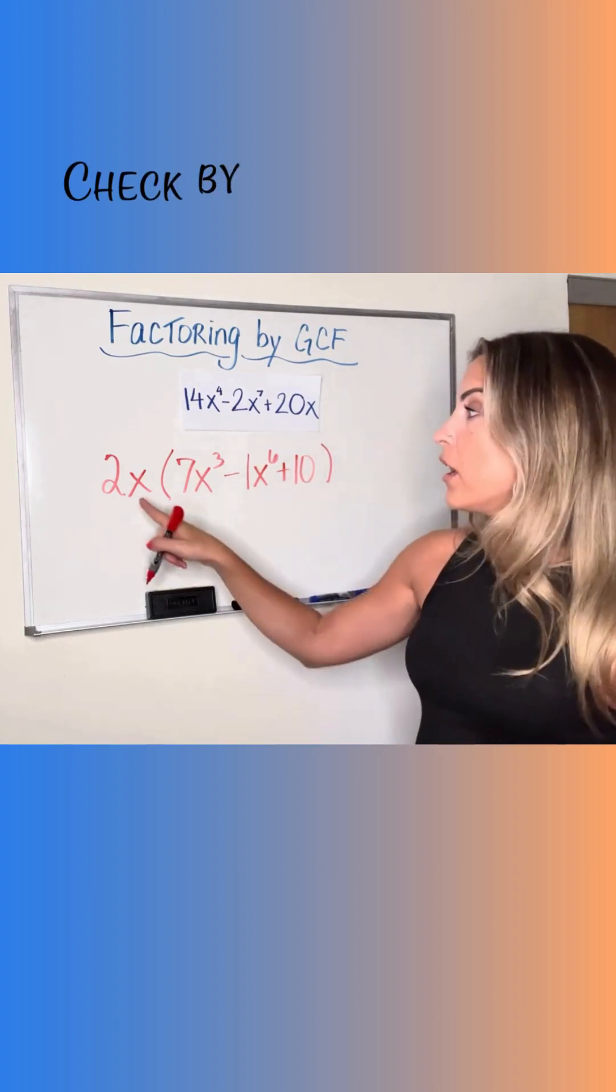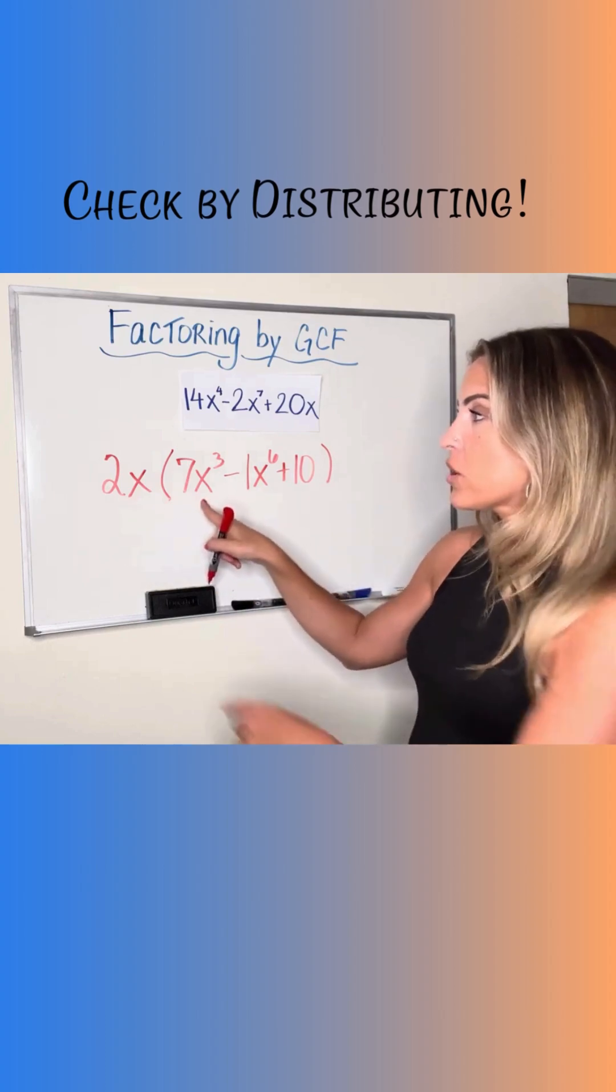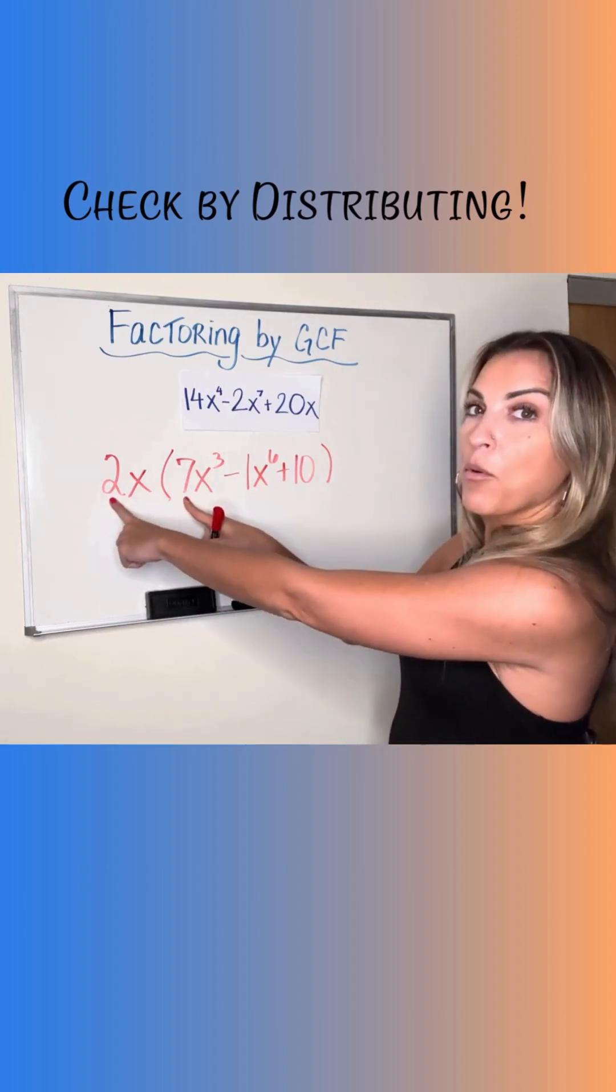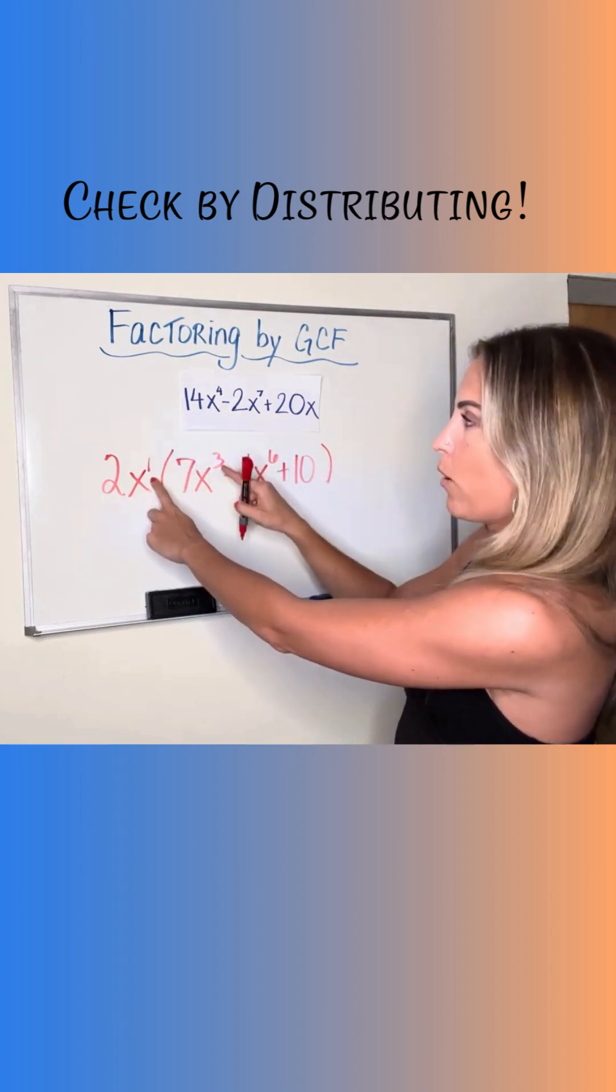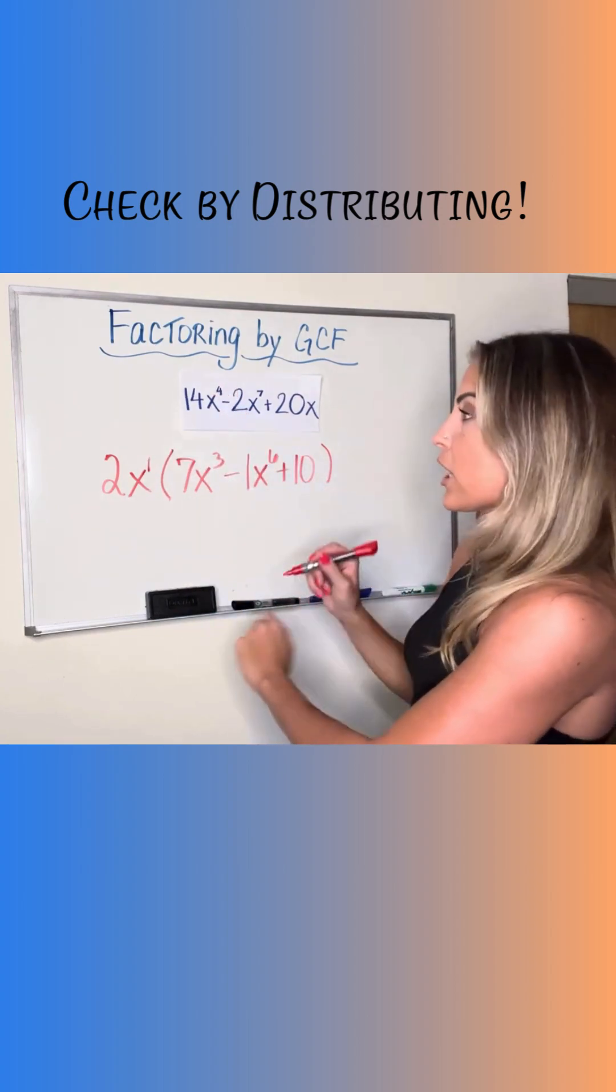And a quick check if we distribute back. 2x times 7x cubed, that's 14. And again, that multiplication rule says I keep the base and add the exponents. 1 plus 3 gives me 4, right? Nice quick check for you.